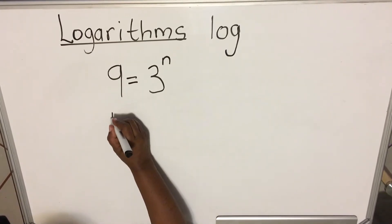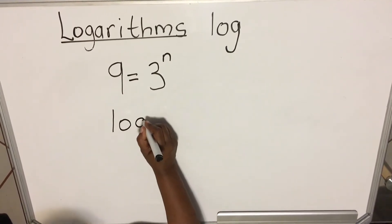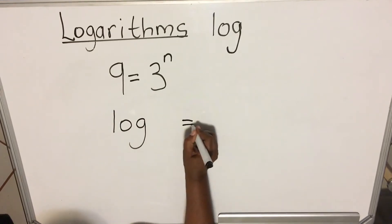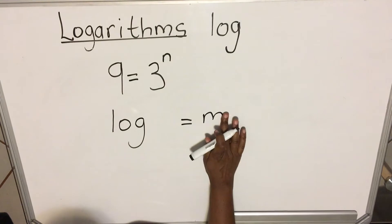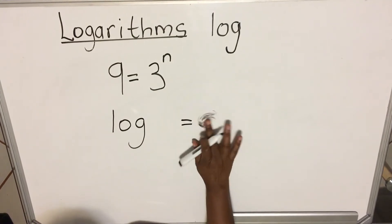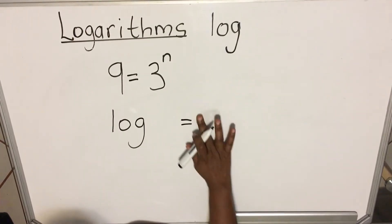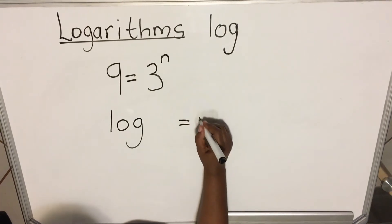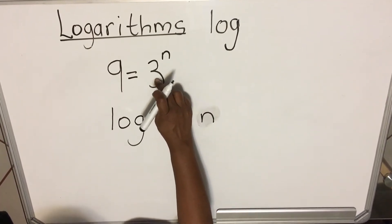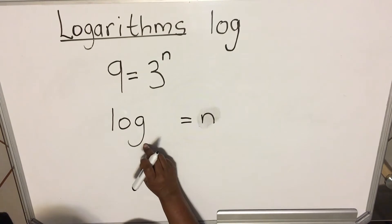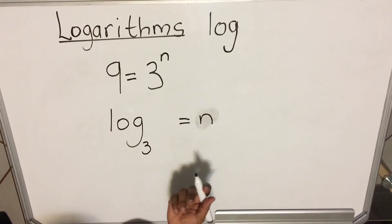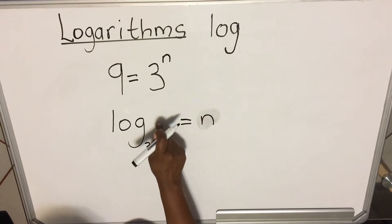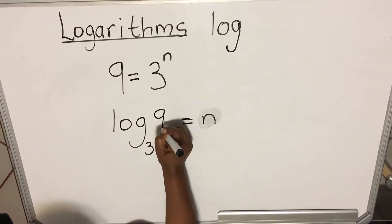So you're going to write log, and then write equals to exponent. My exponent is n, not 3. My exponent is n. What is the base? The base is 3. The base is written at the bottom of the log. And then which number is left not written? It's 9. You write the number here.